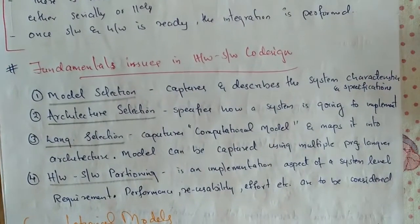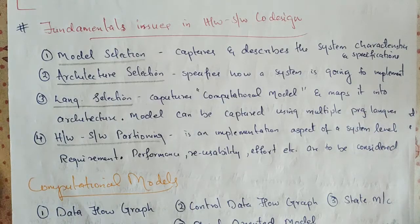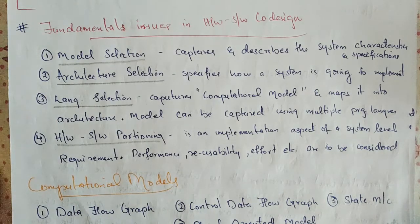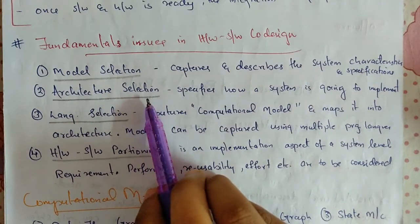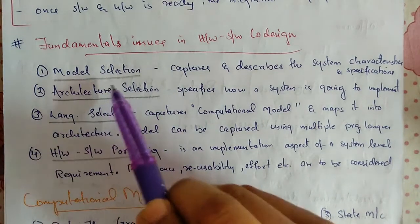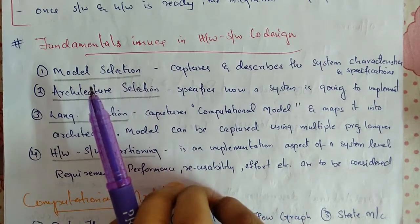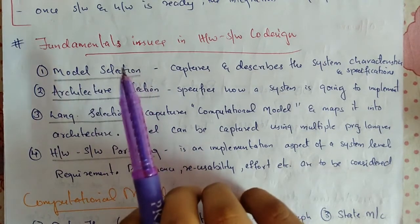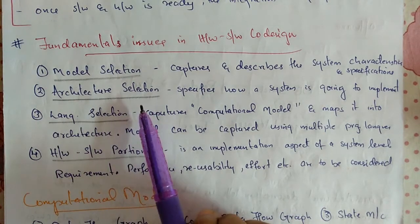Now we'll see the fundamental issues in hardware-software co-design. The first one is model selection — it captures and describes the system characteristics and specification. The second one is architecture selection. The model only captures system characteristics and does not provide information on how the system can be manufactured.